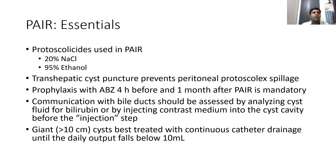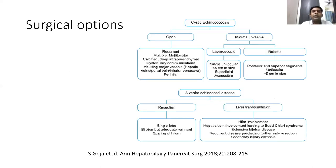Surgical options include minimally invasive laparoscopic or robotic approaches, as well as open surgery. Open surgery is preferable for complicated cases, multiple lesions, recurrence, difficult laparoscopic access, or when encroachment on major vessels is suspected. Simpler, easily accessible lesions are suitable for laparoscopy. Difficult posterior lesions can be considered for robotic surgery, and with expertise, a fair share of complex cases can also be managed laparoscopically.